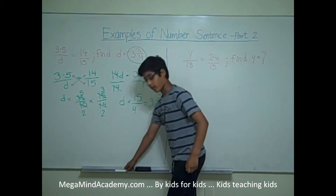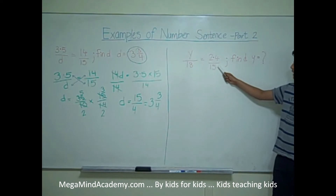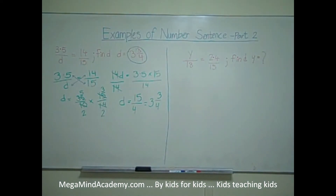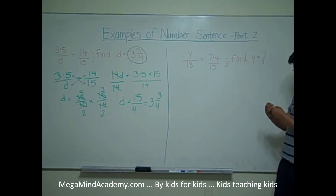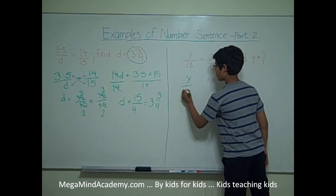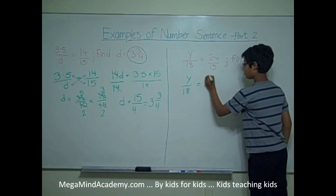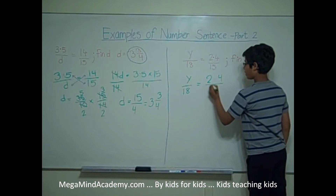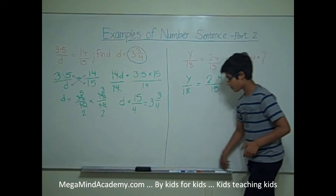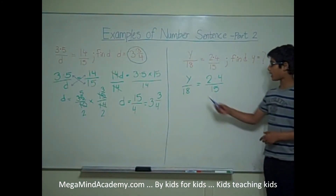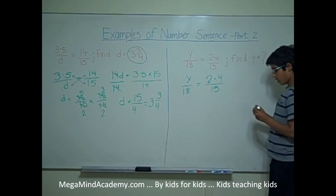Now let's move on to another problem. y over 18 is equal to 2.4 over 15. Find y. Let's first rewrite this equation: y over 18 is equal to 2.4 over 15. The first step in solving this problem is using cross multiplication. That means we multiply y with 15, and 2.4 with 18.